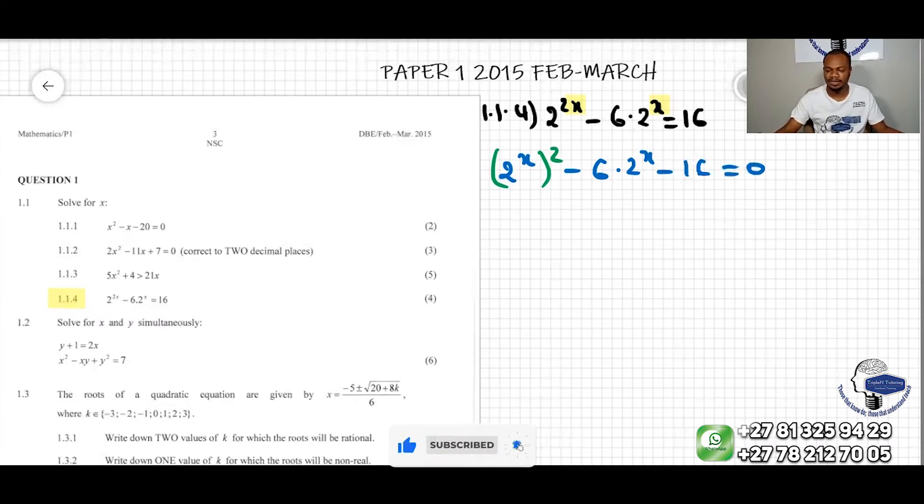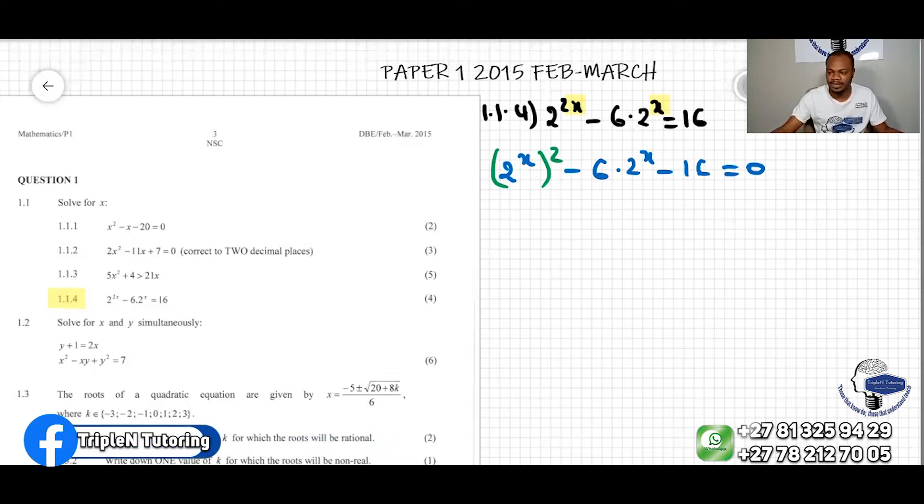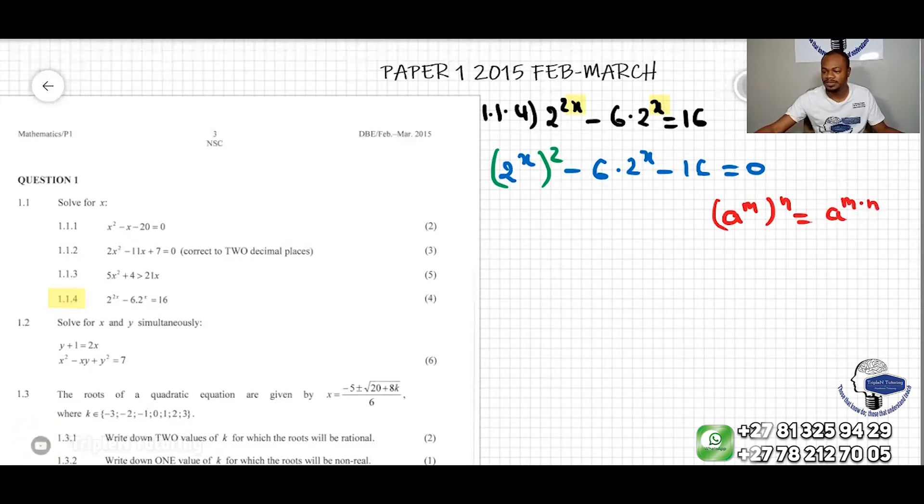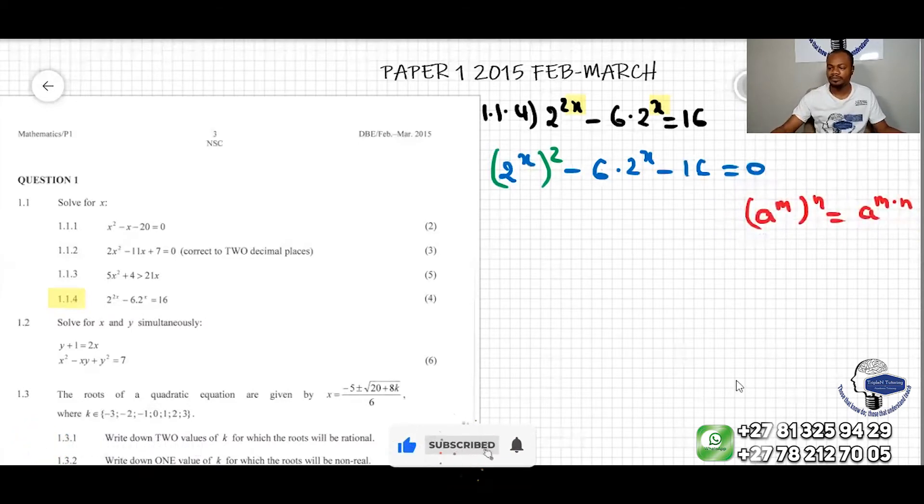Why am I doing that? Just because we know the law of exponents that says a to the m, all to the power of n, is equal to a to the m times n. Let me move this a little bit to this side.